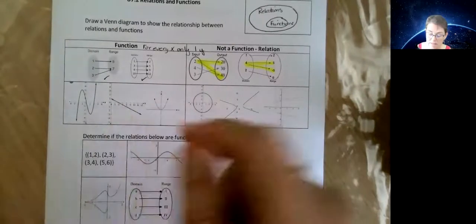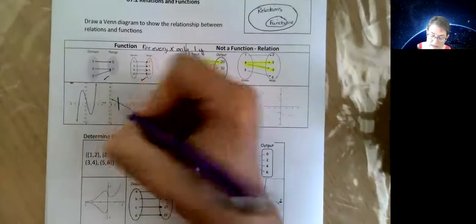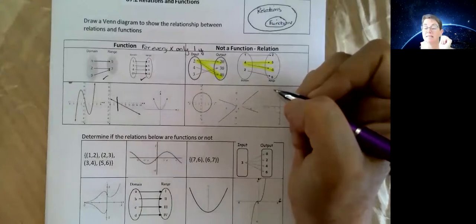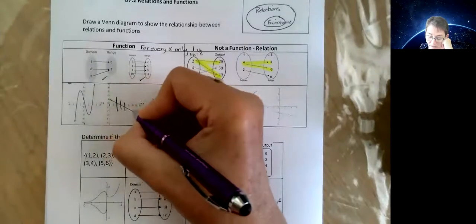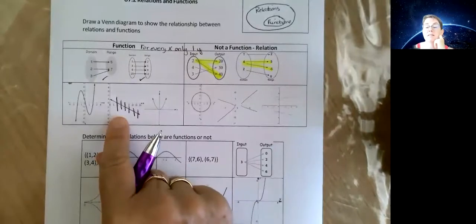You could sit here and pick lots of points off these and make the set notation thing like there was in the previous page. But the truth is, all you got to do is draw a vertical line. I'm going to do it on this one first, because it's easier to see. So if I draw a vertical line and I only hit my graph in one spot, then it is a function.